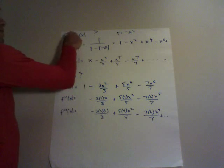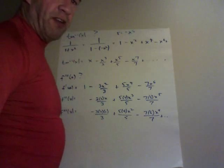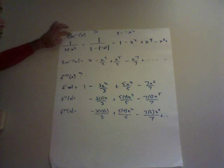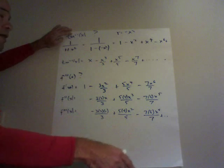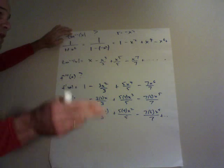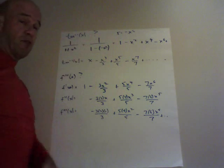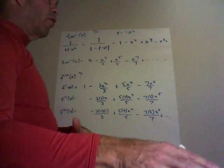I want to get the Taylor series for tangent inverse of x. Now you could do it the long way by taking derivatives. The first derivative would be 1 over 1 plus x squared. The second derivative would be negative 1 times 1 plus x squared to the negative 2 times 2x by the chain rule. Then you'd have the product rule.